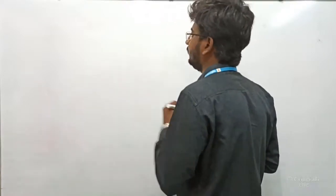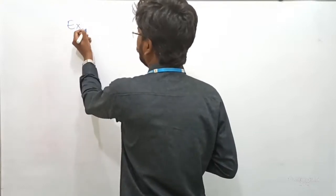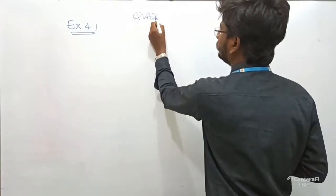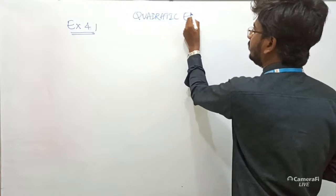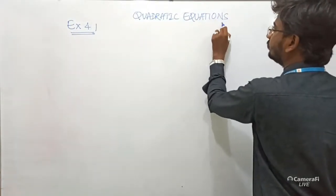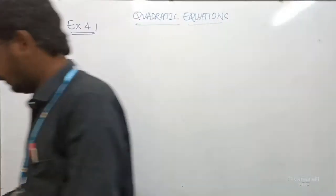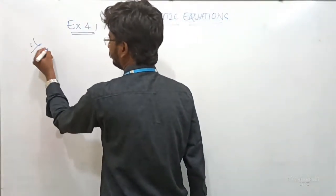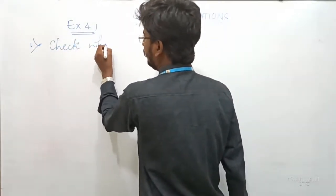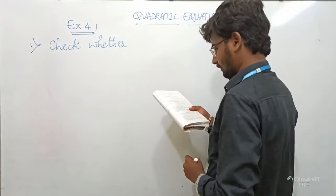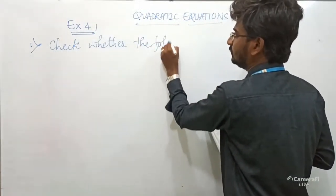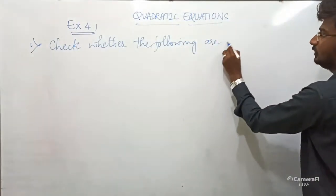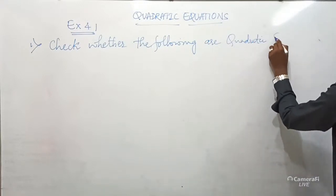Coming to the first exercise, that is Exercise 4.1, chapter name: Quadratic Equations. The question is: check whether the following are quadratic equations.